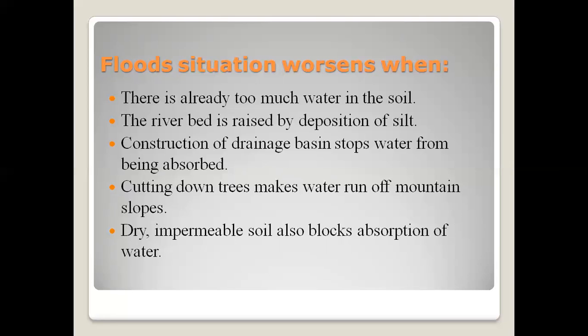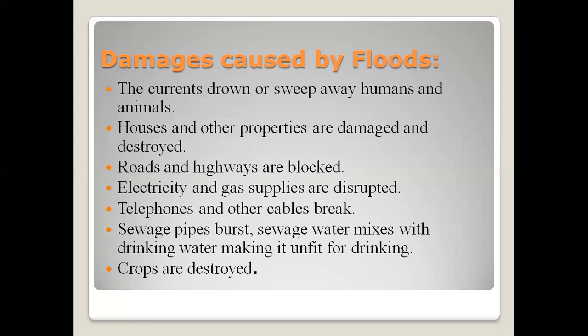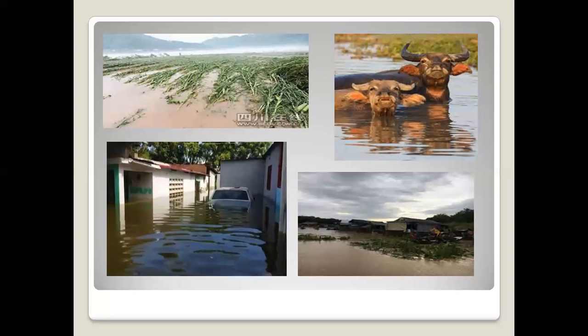Dry impermeable soil also blocks absorption of water. What are the damages caused by floods? The currents sweep away humans and animals because water has a lot of power and strength. Houses and other properties are damaged and destroyed, roads and highways are blocked, and electricity and gas supplies are disrupted. Telephones and other cables break, sewage pipes burst, and the sewage water mixes with drinking water making it unfit for drinking. Floods also cause damage to crops. As you can see in these pictures, crops are damaged, animals suffer in floodwater, houses and cars are submerged, and whole villages come underwater.